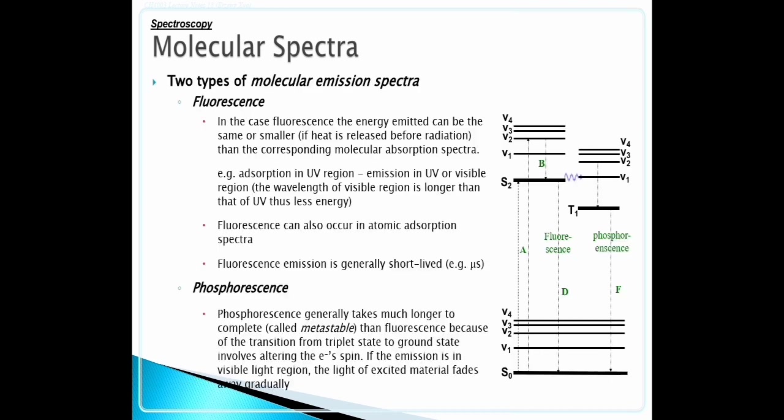Molecular spectra. Fluorescence energy emitted can be the same or smaller, if heat is released before radiation, than the corresponding molecular absorption spectra. Example: absorption in ultraviolet region, emission in ultraviolet or visible region. The wavelength of visible region is longer than ultraviolet, thus less energy.